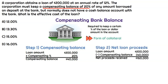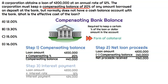In step two, what's the actual amount of cash that they can then go use? That's going to be the $200,000 loan minus that compensating balance of $40,000. That means the actual net proceeds received — the amount that can be used — is $160,000.